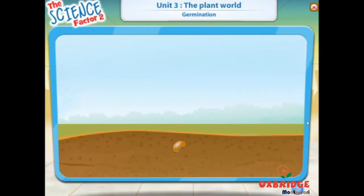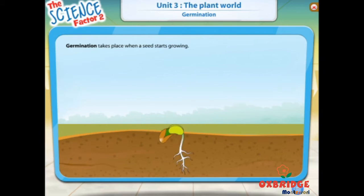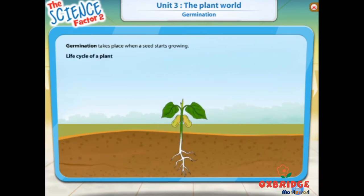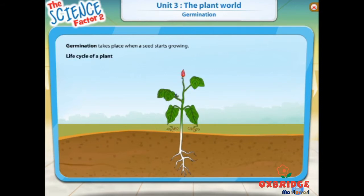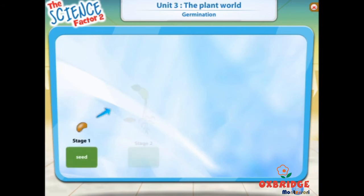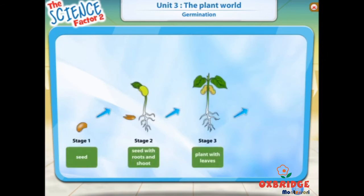Plants are living things. Just like we grow from babies to adults, so do plants. Germination is when a seed starts to grow into a plant. The process by which a seed becomes a fully grown plant is known as its life cycle. There are four main stages in the life cycle of a plant.